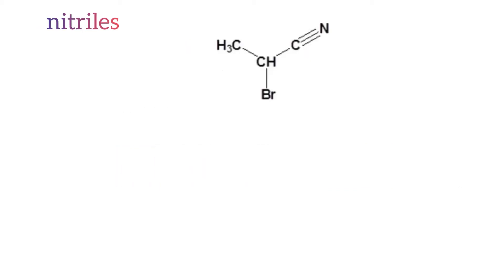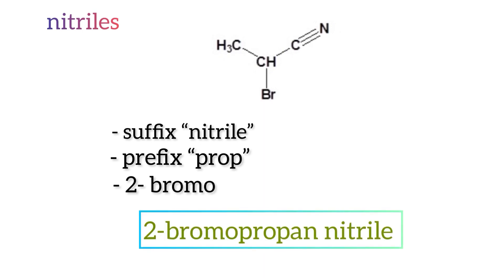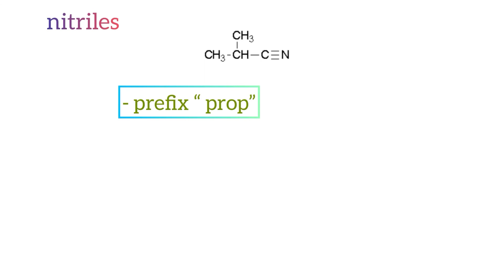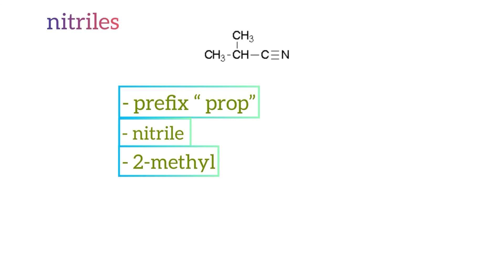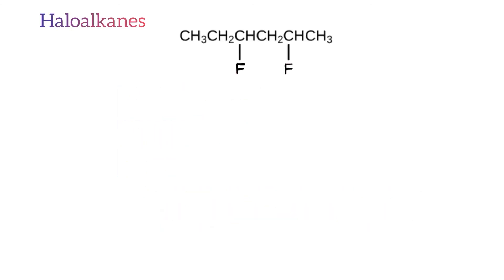Nitriles: here is an example of a nitrile group. As you can see there is a carbon triple bonded to a nitrogen atom, therefore the name of the molecule includes the suffix '-nitrile'. There are three carbon atoms, so the prefix is 'prop'. There is one bromine atom on carbon two, thus the name starts with '2-bromo', giving 2-bromopropanenitrile. Here is another example: there are three carbon atoms in the main chain, so the prefix is 'prop'. There is one methyl group attached to carbon two, giving the locant '2-methyl', so the name is 2-methylpropanenitrile.